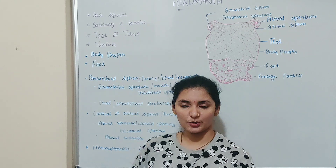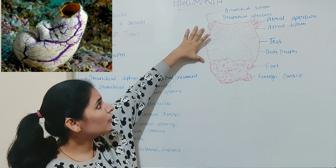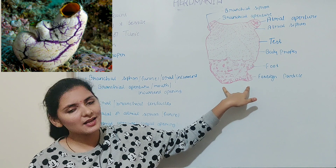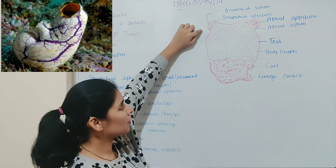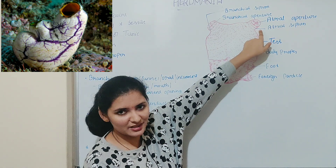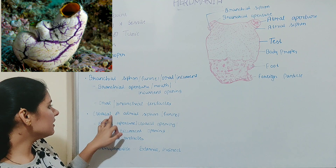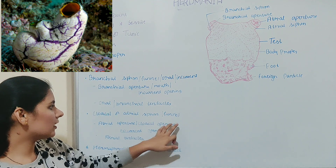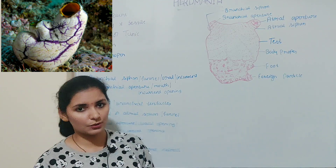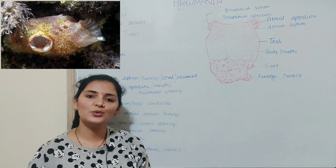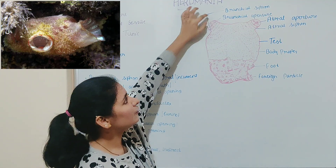The body proper is the free end of the organism and is longer and broader when compared to the foot or basal part. The free end of the body proper consists of two conical projections called the branchial siphon and atrial siphon. Branchial siphon is also called the oral siphon or incurrent siphon; atrial siphon is also called the cloacal siphon or excurrent siphon. These two siphons face away from each other like two ears of a teddy bear.